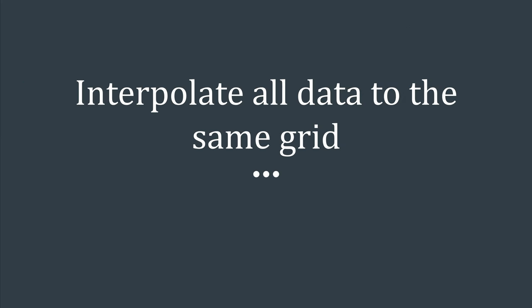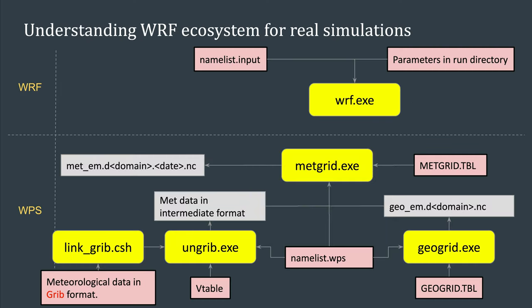Now we need to interpolate all data to the same grid. For this, you run metgrid.exe in WPS. This program needs the grid in geo_em files, the meteorological data in intermediate format, information from namelist.WPS, and another table called metgrid.tbl. Again, this table can differ depending on the source of meteorological data, and you need to make sure you are using the right table for your data. Once metgrid has run, it will interpolate the geographical data and meteorological data onto the grid you want to use for your WRF simulation, and put all these data into NetCDF files called met_em.